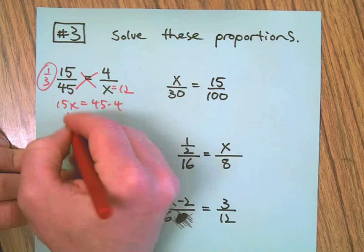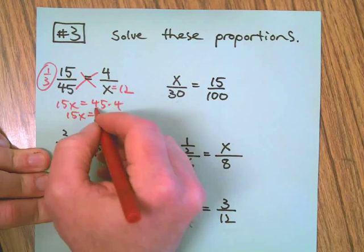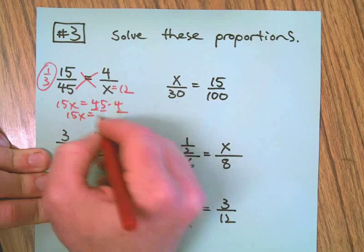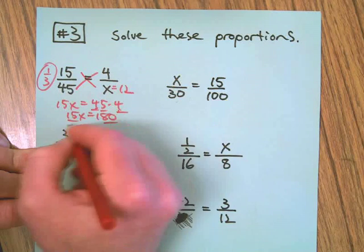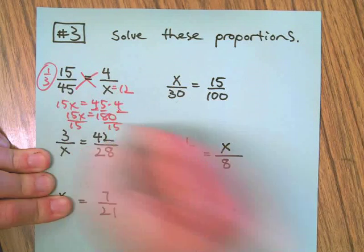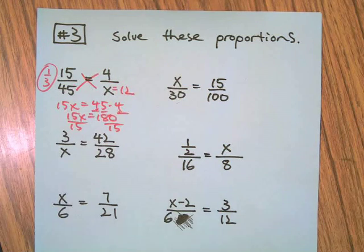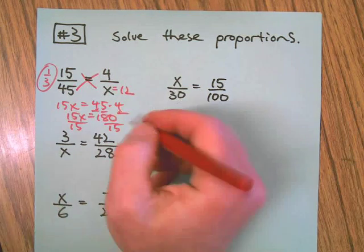45 times 4 is 160 plus 20, which is 180. Divide both sides by the coefficient of X. We get 180 divided by 15, and you guessed it, it's 12.